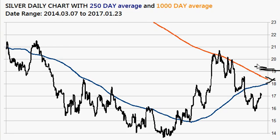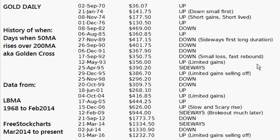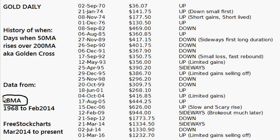We're going to show the history of gold's Golden Cross — specifically the 50-day moving average rising over the 200-day moving average. The table has three columns: the date the Golden Cross occurred, the price of gold on that date, and what happened to price momentum afterward. All dates can be cross-referenced. I'm using LBMA data from 1968 to 2014, and freestockcharts.com for dates after that.